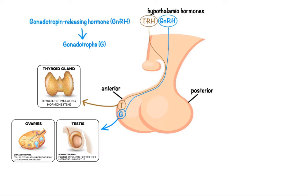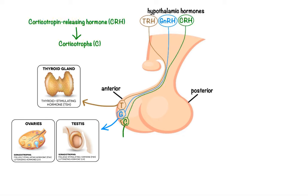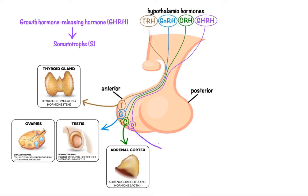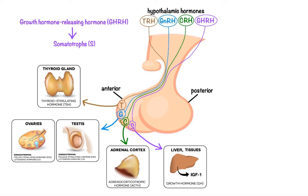The next one is corticotropin-releasing hormone, CRH for short, that stimulates corticotrophs to release adrenocorticotropic hormone, which in turn stimulates the adrenal cortex to produce and secrete certain steroid hormones. The next one is growth hormone-releasing hormone, GHRH for short, that stimulates somatotrophs to release growth hormone, which in turn stimulates the liver and other tissues to produce growth stimulants called insulin-like growth factors.